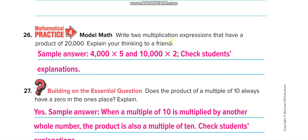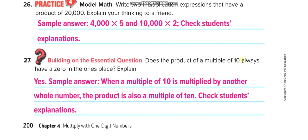Write two multiplication expressions that have a product of 20,000. For example: 4,000 times 5 is 20,000, and 10,000 times 2 is 20,000. Does the product of a multiple of ten always have a zero in the ones place? Yes, always — because you remove the zero and then put it back at the ones place. When a multiple of ten is multiplied by another whole number, the product is also a multiple of ten.